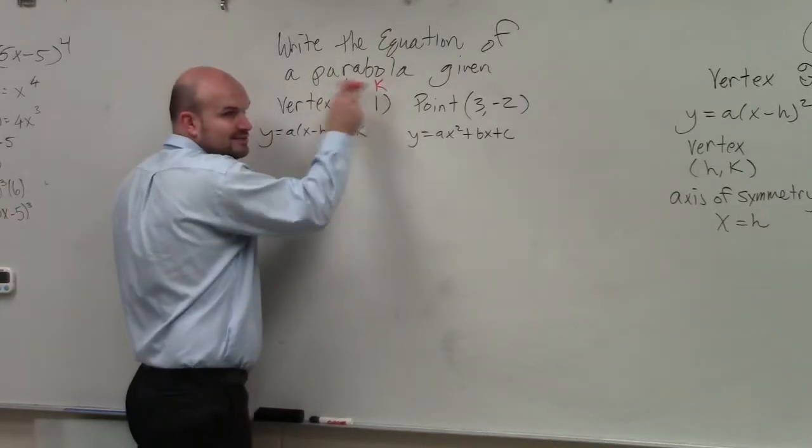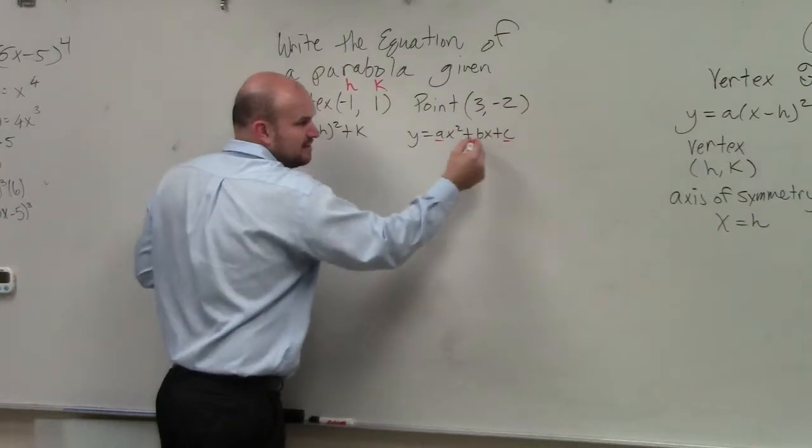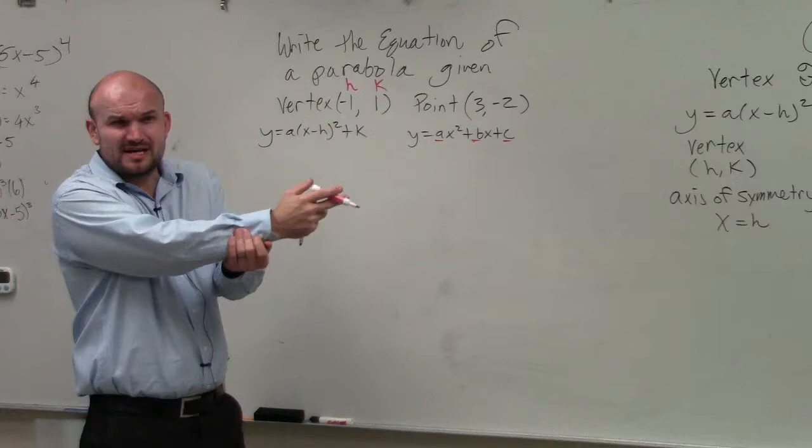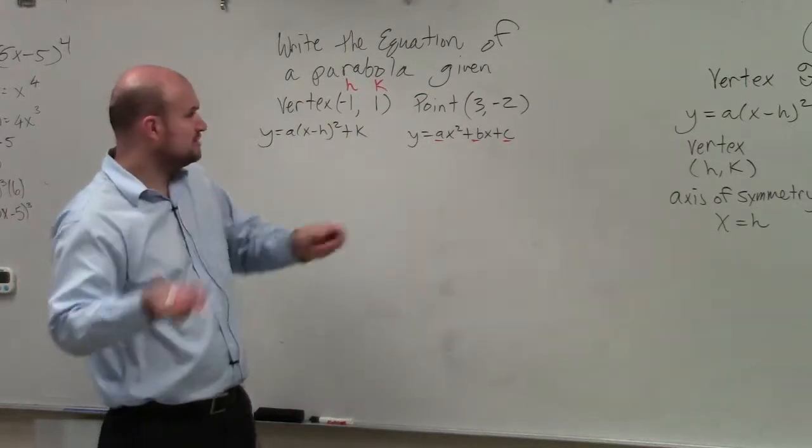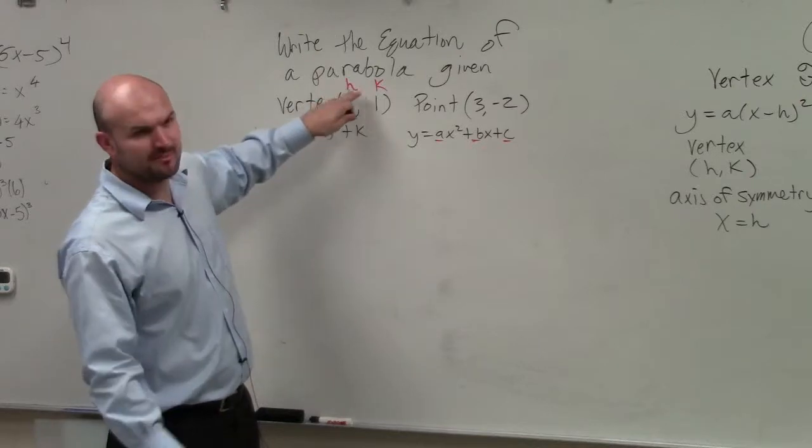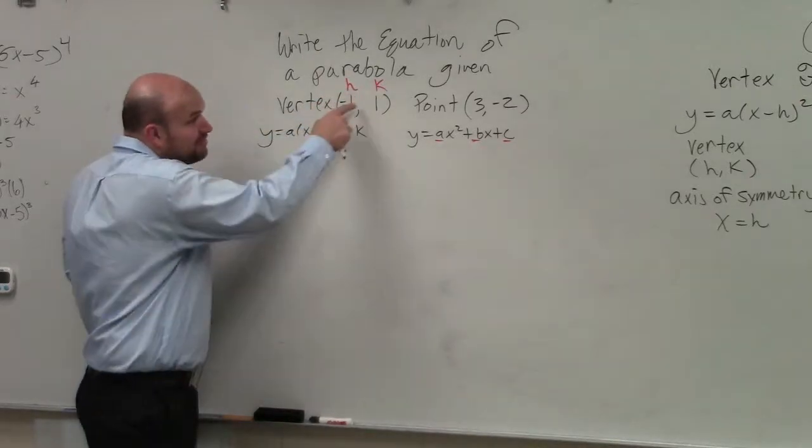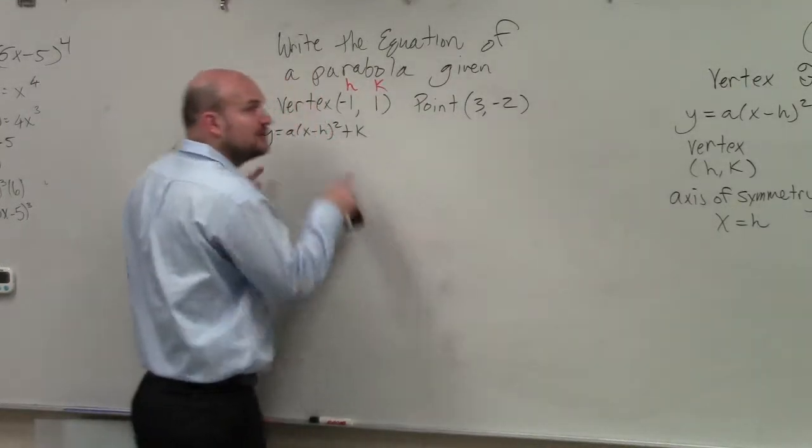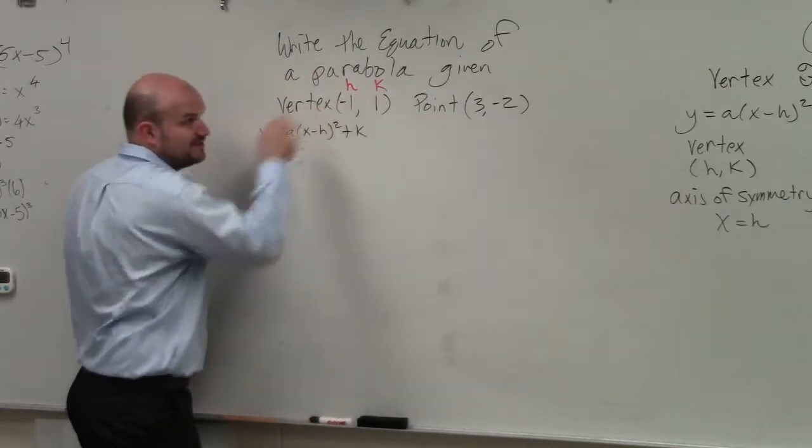Now, if knowing these two points, does that help us with A, B, or C? No. Do we know what A, B, and C represent for our vertex? No. So is using standard form really going to help us by plugging in H and K? No. But can we plug H and K in for these two? Absolutely. So we don't want to use standard form. You're going to want to use vertex form when given the vertex.